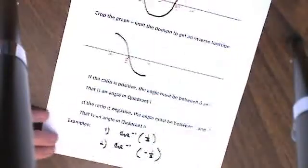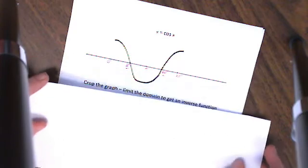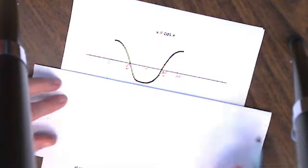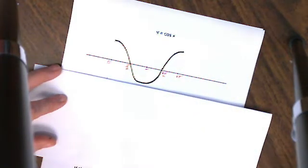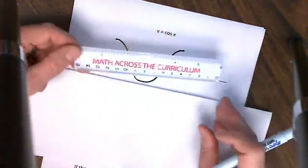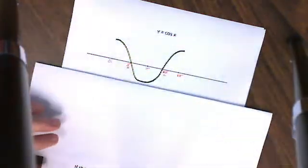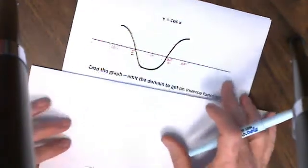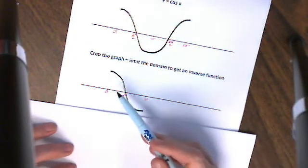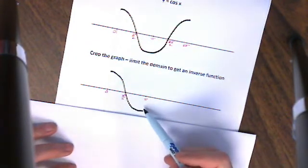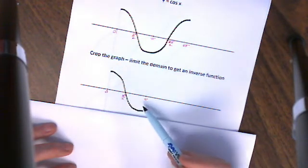Things get a little different when we get to the cosine function. Here's one period of the cosine function going from 0 to 2 pi. Obviously, this is not going to pass the horizontal line test. So I'm going to chop my graph down to force it to pass the horizontal line test — doing what members of the mathematics community have agreed on. We're going to crop that graph so that it now only goes between 0 and pi.